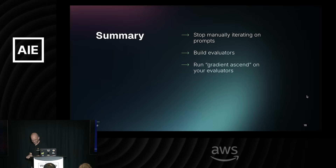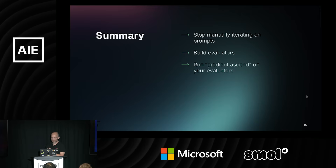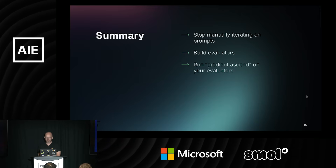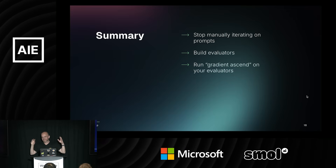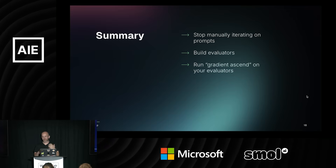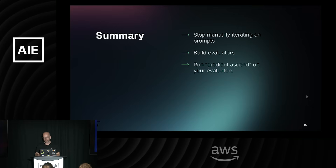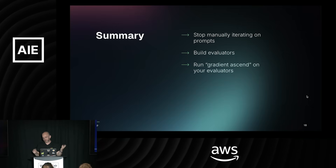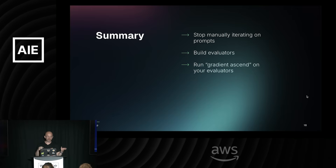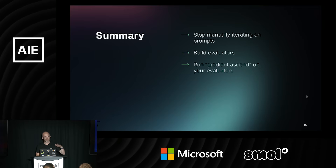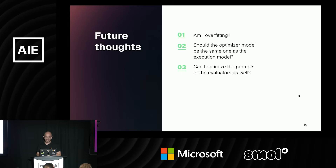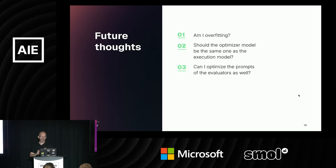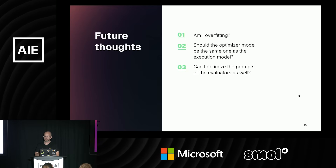If there's one thing you want to take from this talk: you can vibe-engineer your prompts. You don't need to manually iterate on prompts — you just need to build evaluators. Then you can run gradient ascent on your evaluators: you have your score and you can slowly try to optimize it, either automatically with an agent like I did, or manually by reading guides on how to write the best prompts and fixing them again and again.